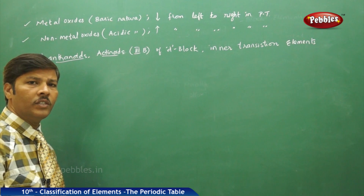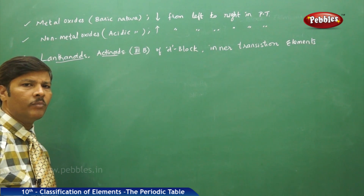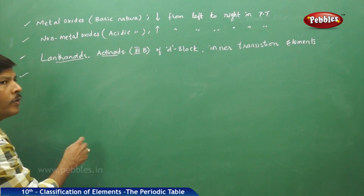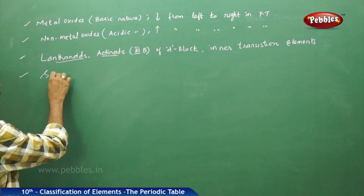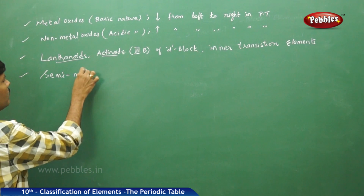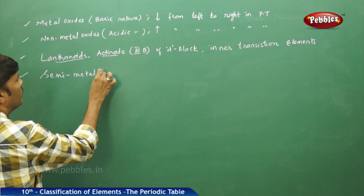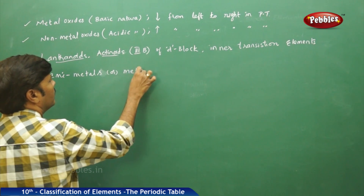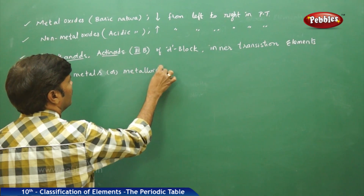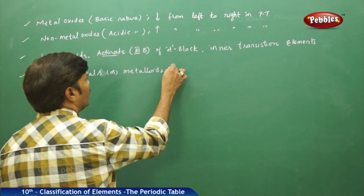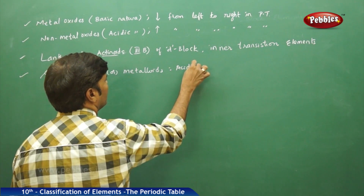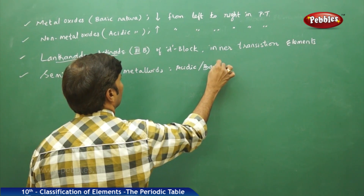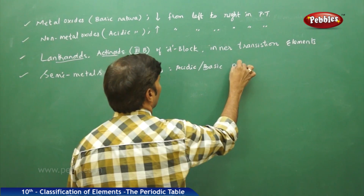One thing we have to understand is they share the properties of both S block and P block elements. Next, we should go for semi-metals or metalloids. Metalloids are both acidic as well as basic in nature — they show both acidic nature and basic nature.